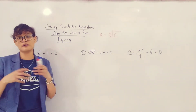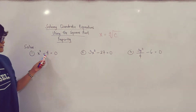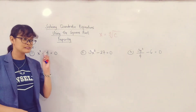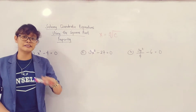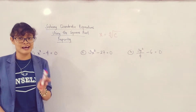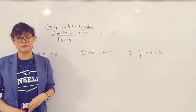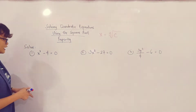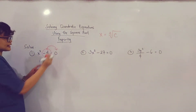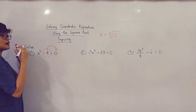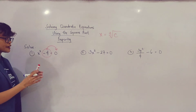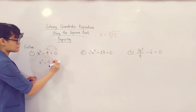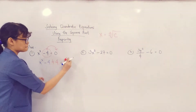Paano mo nalaman kung APE or SPE yung gagamitin mo? Every time na negative number yung gusto mong ilipat sa kabilang side ng equation, APE ang gagamitin mo. Pag positive naman yung ilipat, SPE naman yun. That is the reason why nagbabago yung sign ng isang number pag nilipat siya sa kabilang side ng equation. So I want to transpose negative 4 to the other side. I need to add 4 on both sides of the equation. So magiging x squared minus 4 plus 4 equals to 0 plus 4.